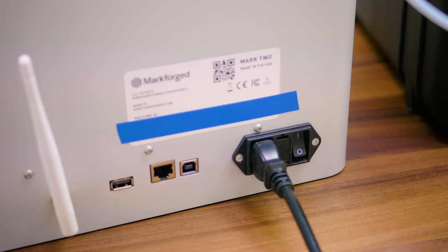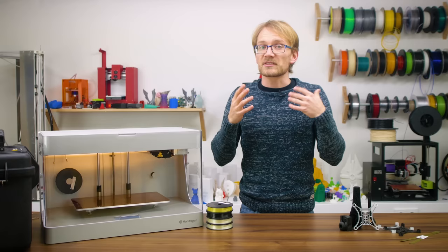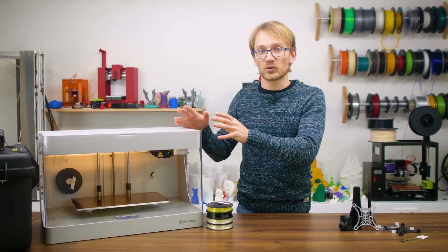On the back of the machine, you get power in, USB, Ethernet and Wi-Fi, since the Markforged machines are pretty much exclusively web and cloud-based. Yes, you can still use a USB thumb drive to ferry print files between your computer and the printer, but I've found that the integration with their Eiger cloud slicer works really well.